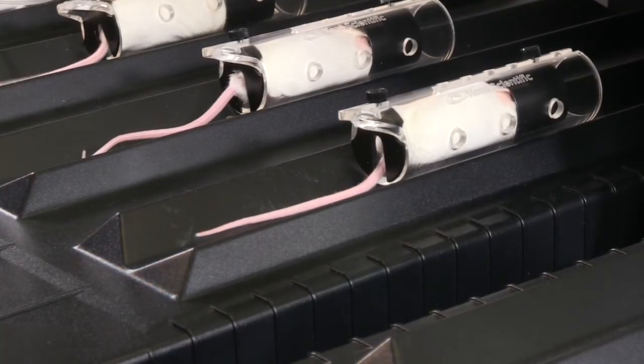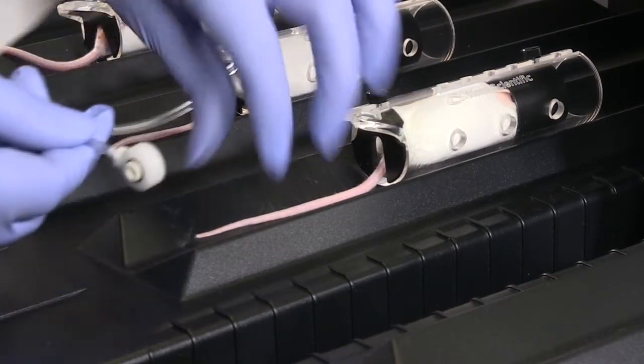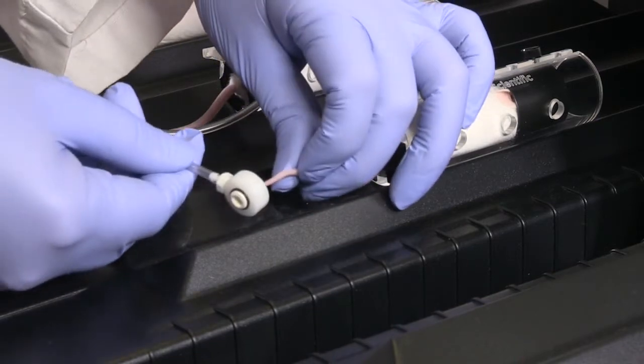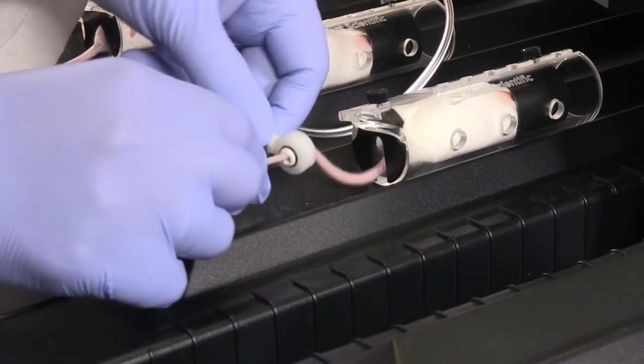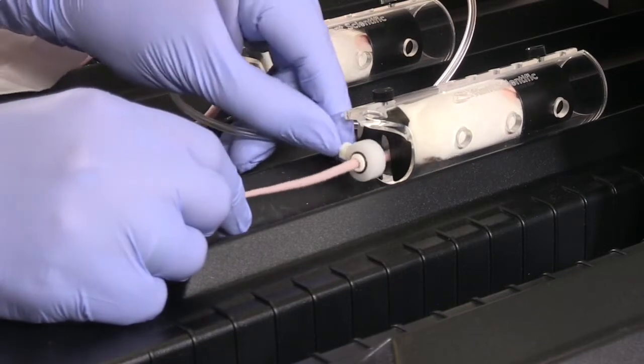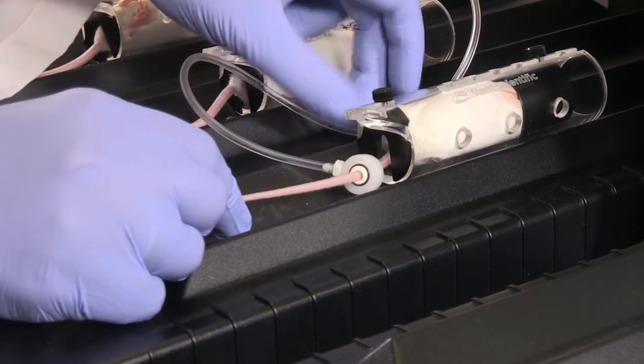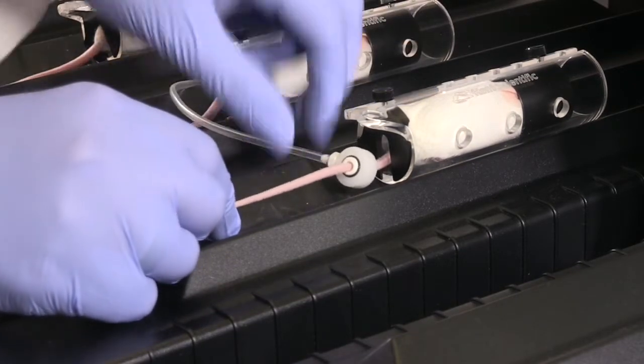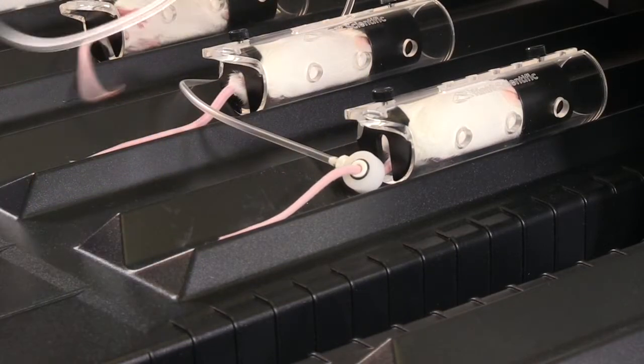Proper cuff placement is very important for accurate blood pressure readings. First, slide the occlusion cuff up the tail, just until you begin to feel some friction. The cuff should fit closely to the tail but should not be tight. The cuff doesn't need to reach the base of the tail; fit is more important than position.